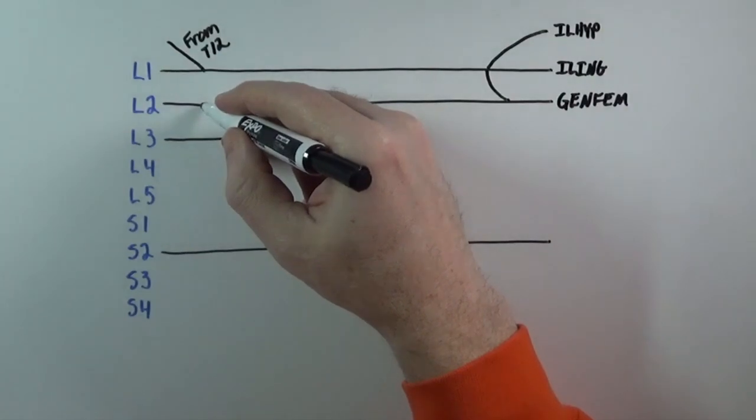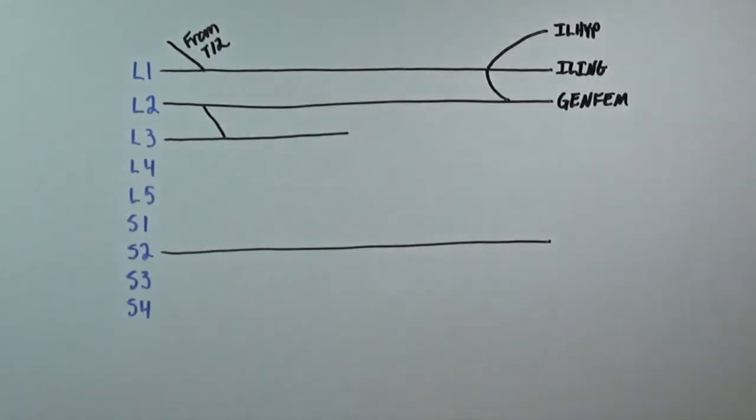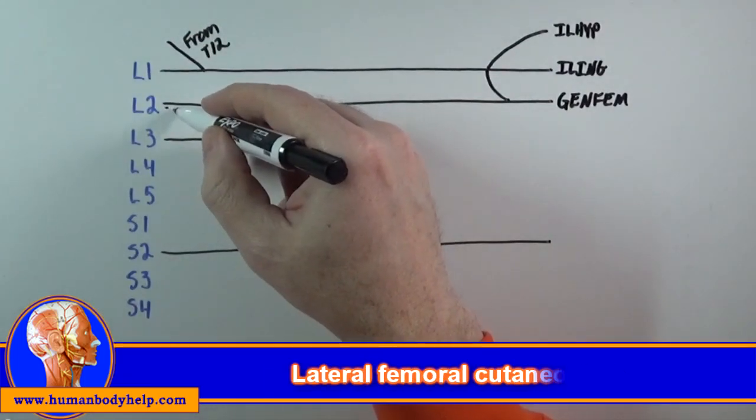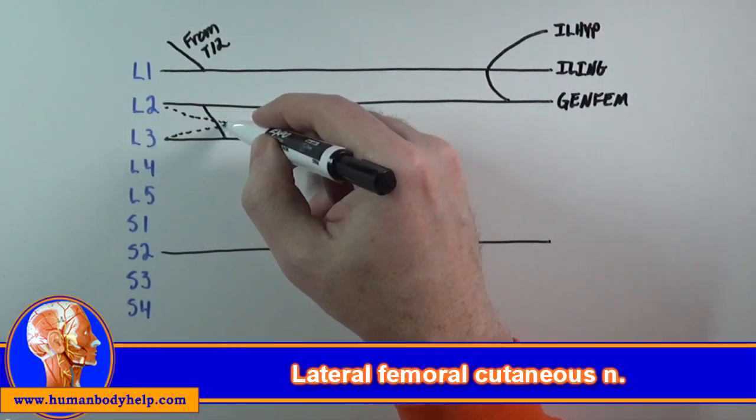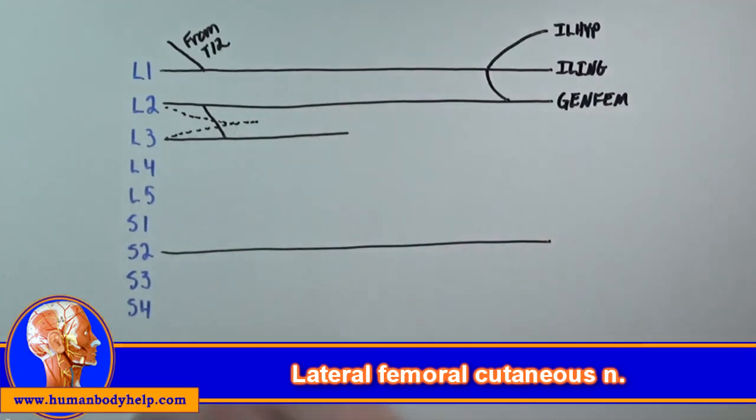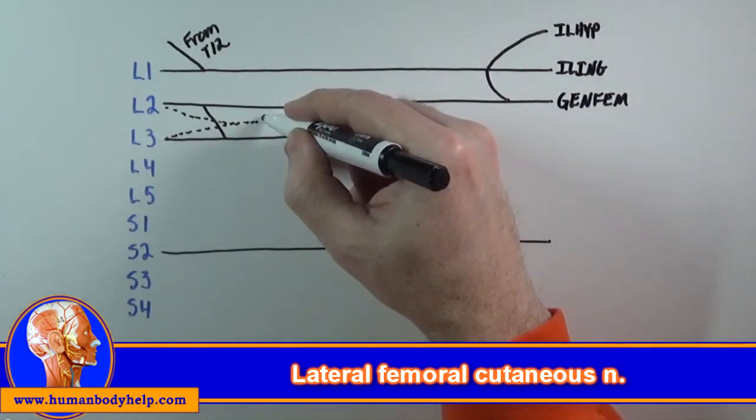Next, I'll draw a little connector to indicate the contribution of fibers from L2 down to L3, and behind this, indicated by the dotted line, will be the lateral femorocutaneous nerve.